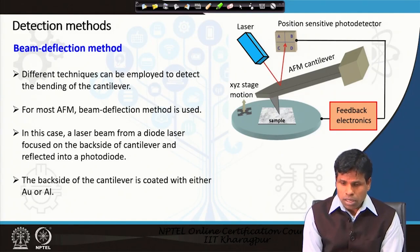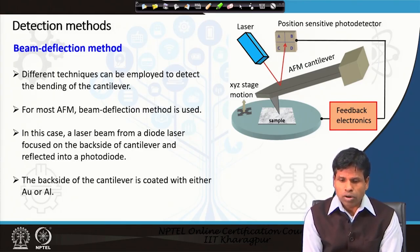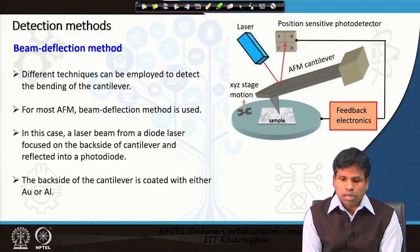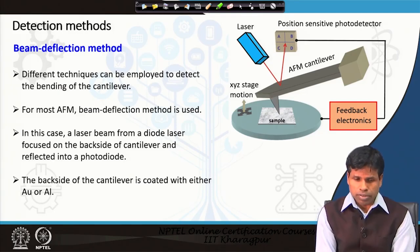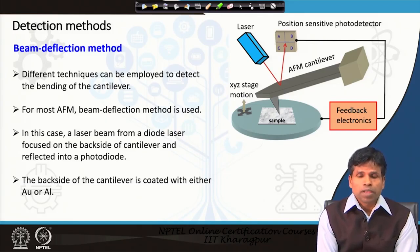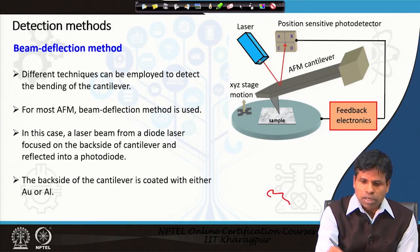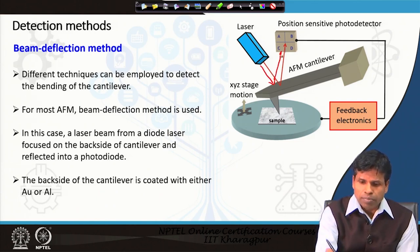Let us begin with the simplest AFM schematic. We have a sample over which there is an AFM cantilever that will scan over the surface. The deflection of the cantilever is detected by putting a laser beam on the backside of the cantilever, and the reflected laser light goes to a position-sensitive detector.